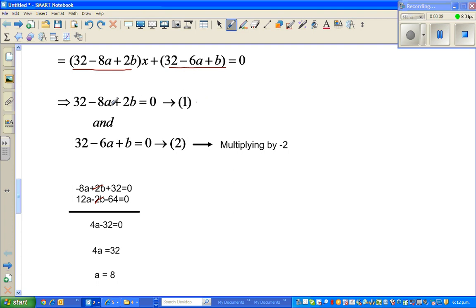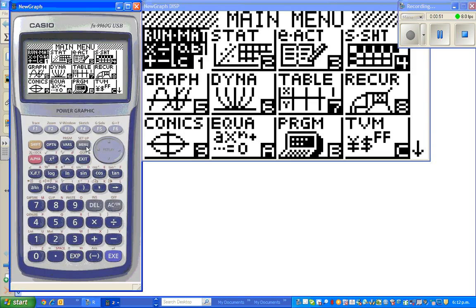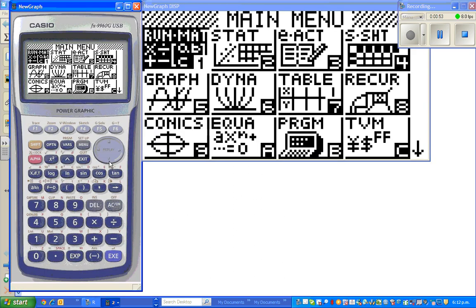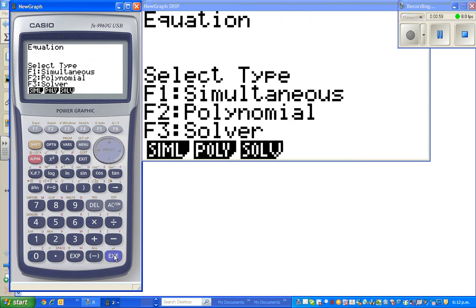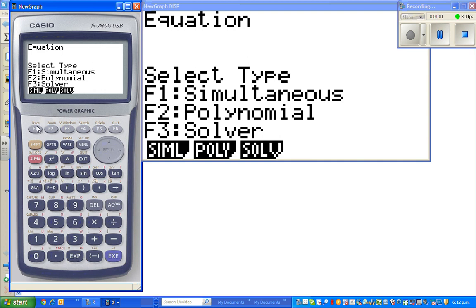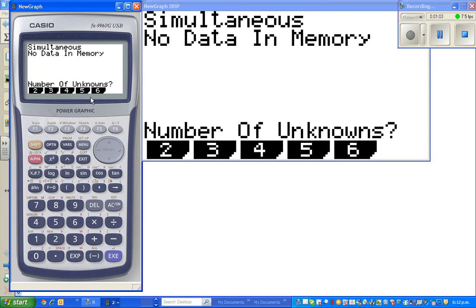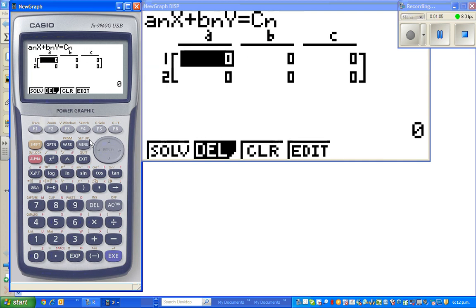So this is -8a + 2b = 32 and -6a + b = 32. What we do is open your graphic calculator. Let us go to equation. You go to equation.